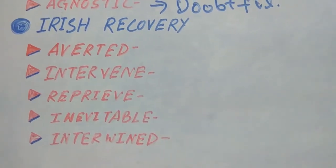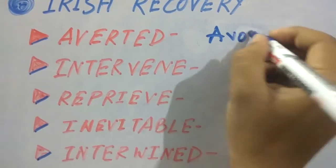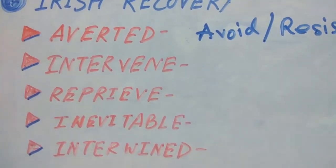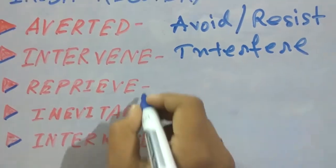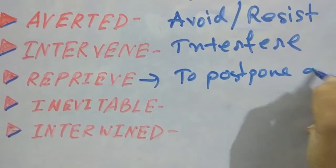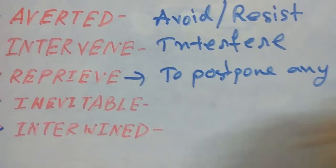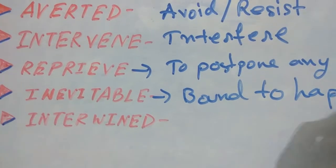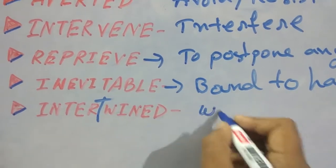The vocabularies from this article. First: 'averted' means to avoid or resist. Second: 'intervene' means to interfere. 'Reprieve' means to postpone any judgment or any punishment. 'Inevitable' means bound to happen. And the last one: 'intertwine' means which mingles together, which is mixed together.